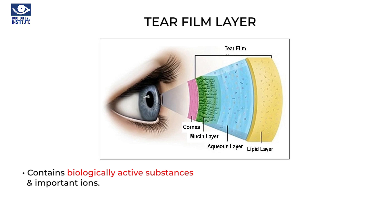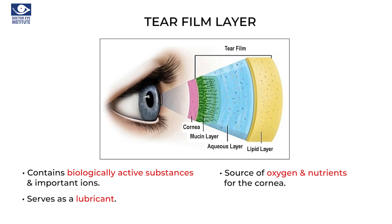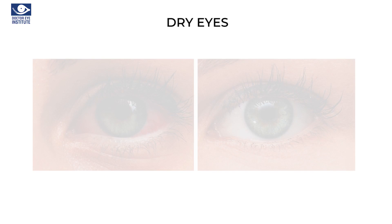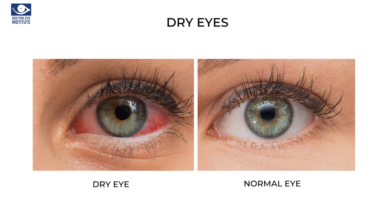Along with the transparent cornea, the tear film which covers the corneal surface also contributes to visual clarity and the health of the cornea. This tear film contains many biologically active substances and important ions. It thus serves not only as a lubricant and source of oxygen and nutrients for the cornea, but also as a source of regulatory factors required for repair and maintenance. Deficiency of tear film results in dry eyes and ocular surface disorders, about which we will discuss in detail later.